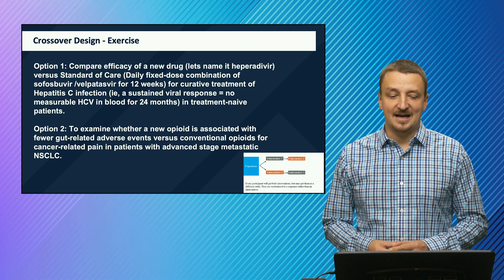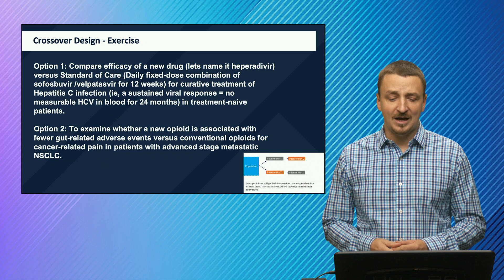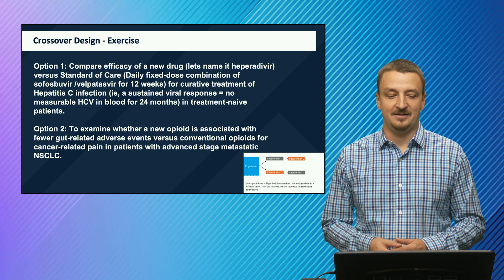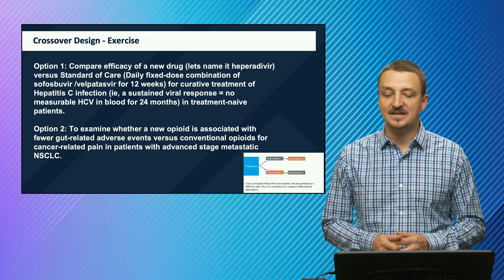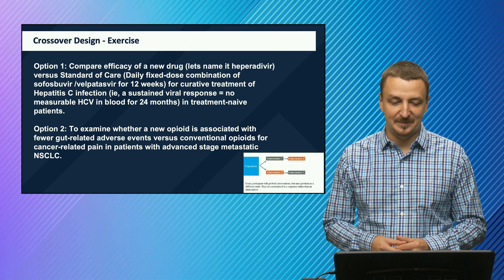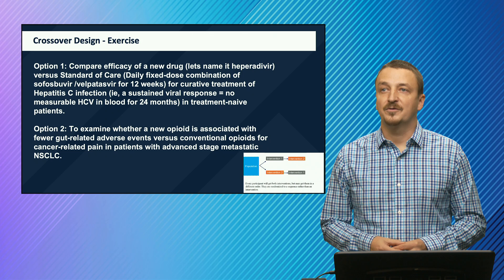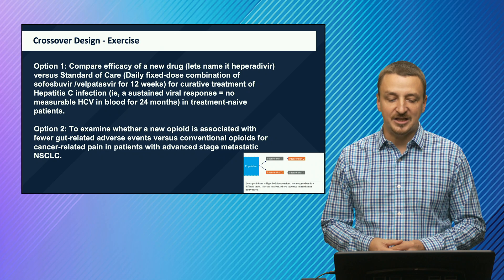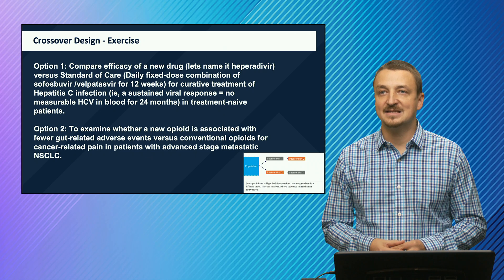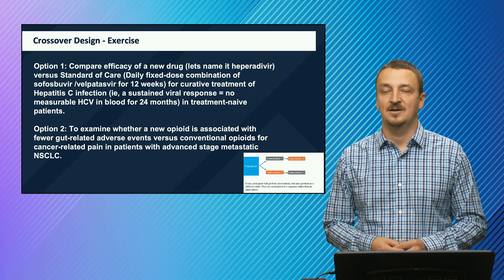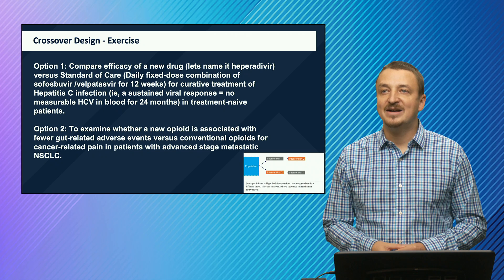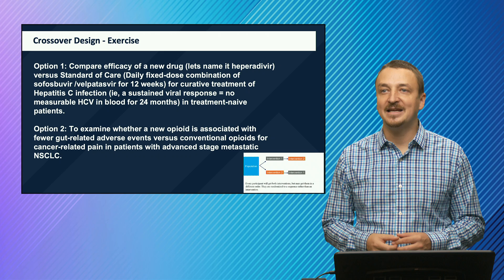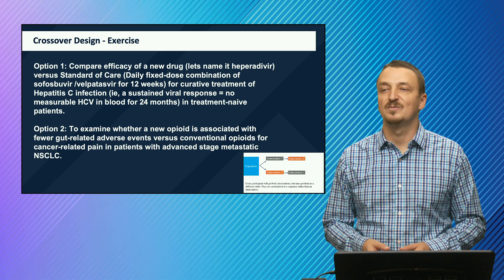These are the options for the exercise. Option one is to compare efficacy of a new drug — Hiperadivir — versus standard of care, which is a daily fixed dose combination of sobospiravir and valvatasvir for 12 weeks, for curative treatment of hepatitis C infection, defined as sustained viral response with no measurable HCV in blood for 24 months in treatment-naive patients. Option two is to examine whether a new opiate is associated with fewer gut-related adverse events versus conventional opiates for cancer-related pain in patients with advanced stage metastatic non-small-cell lung cancer.